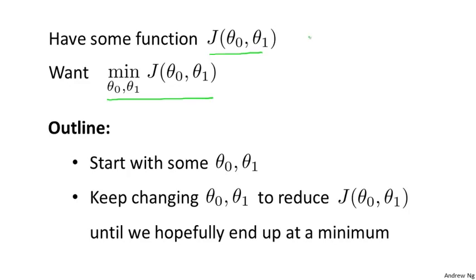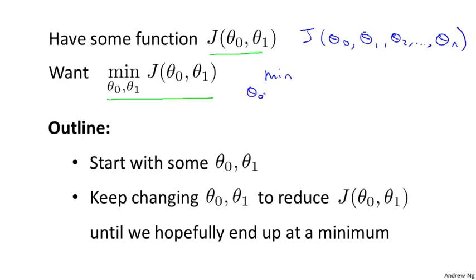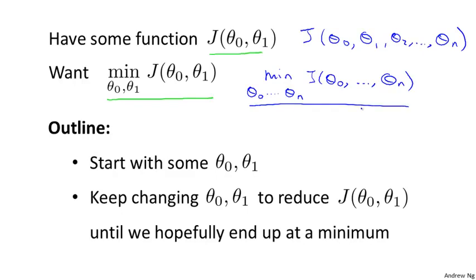It turns out that gradient descent actually applies to more general functions. So imagine if you have a function J of theta_0, theta_1, theta_2, up to some theta_n, and you want to minimize over theta_0 up to theta_n of this J of theta_0 up to theta_n. It turns out that gradient descent is an algorithm for solving this more general problem.